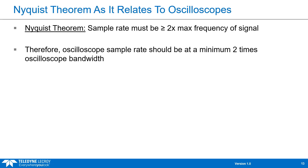And that's exactly what Nyquist theory is saying. Nyquist theory states that sample rate must be greater than two times the maximum frequency of your signal. As it pertains to oscilloscopes, you want your sample rate to be at least two times higher than the oscilloscope bandwidth.